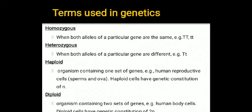The next terms are homozygous and heterozygous. Homozygous means when both alleles of a particular gene are the same — it may be TT (capital T, representing tallness) or tt (small t, representing dwarfness). That is the homozygous condition. Heterozygous means when both alleles of a particular gene are different — for example, capital T and small t are both present. In heterozygous condition, which character expresses? The dominant gene only expresses itself.